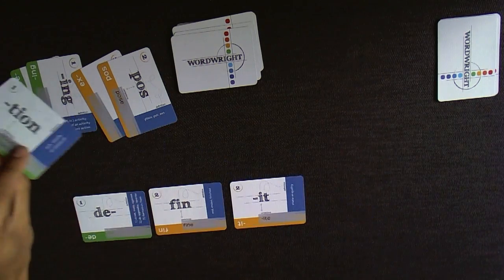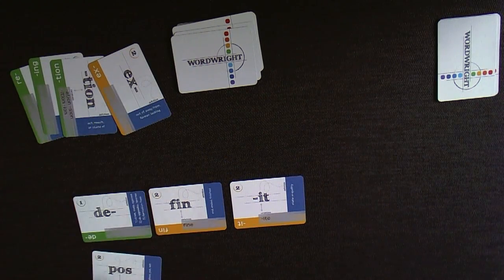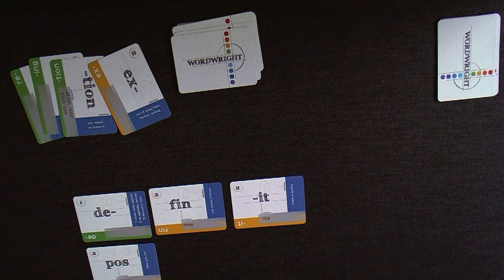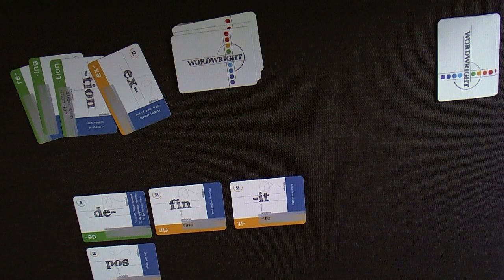She could build a word in a different direction, making definite and another word, depose. If she did this, she would score D twice, scoring five points for definite (one plus two plus two), and three points for depose (one plus two).